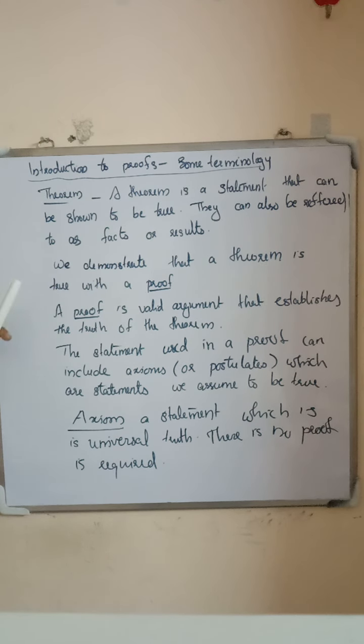A proof is a valid argument that establishes the truth of the theorem. The method of proving a theorem with some valid argument is known as a proof. The statements used in a proof can include axioms or postulates, which are statements we assume to be true.